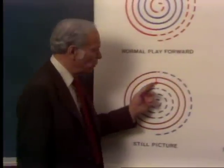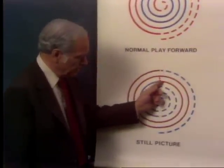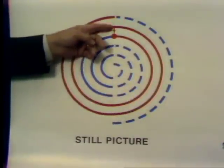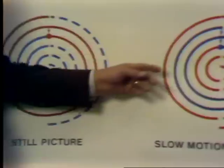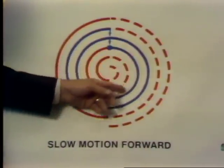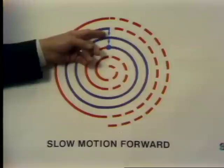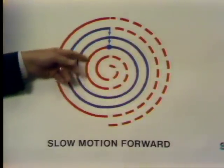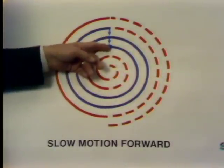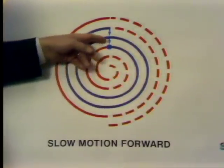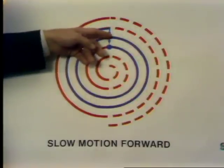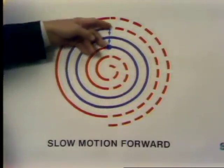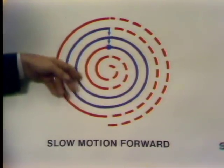A still frame is produced by continuously repeating one track — it is read, and then the beam jumps back to repeat the same track. Slow motion is simply a series of still pictures; the longer each still stays on, the slower the motion. The slow motion slide control lets you determine how long each picture remains on the screen before the beam moves on to the next track and creates the next still picture.